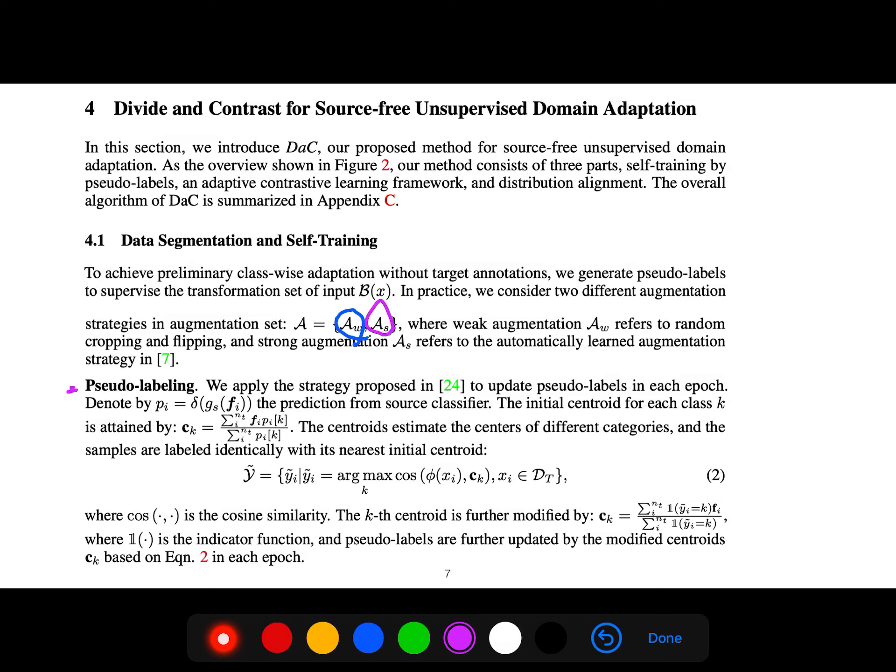For pseudo-labeling, they apply the strategy proposed in this reference to update pseudo-labels in each epoch. The probability p_i is the prediction from the source classifier. The initial centroid for each class k is calculated, which estimates the centers of different categories, just like the idea of prototypes in few-shot learning.